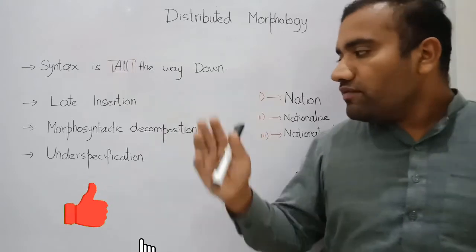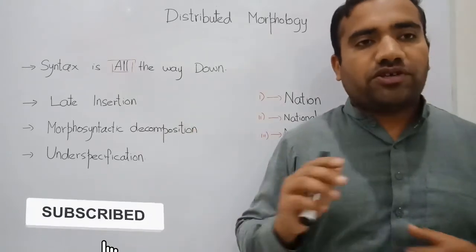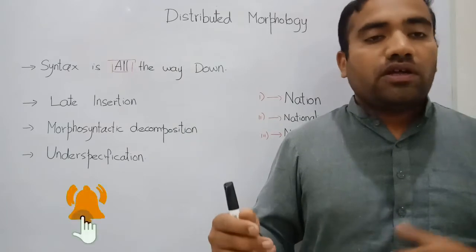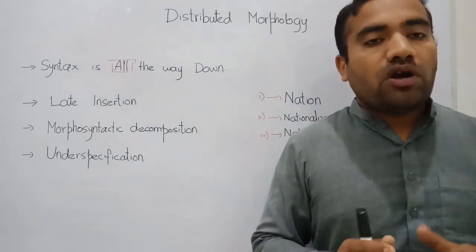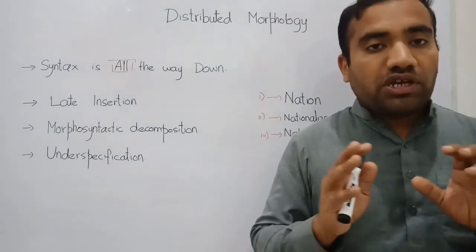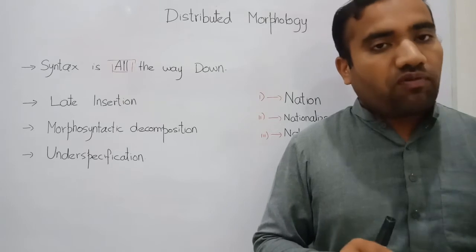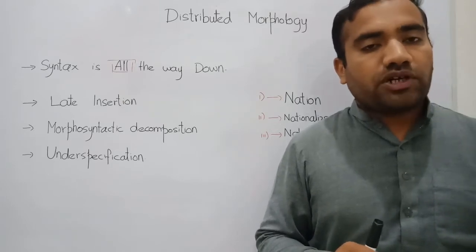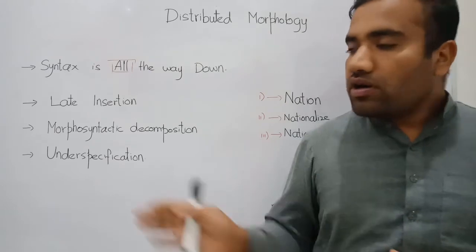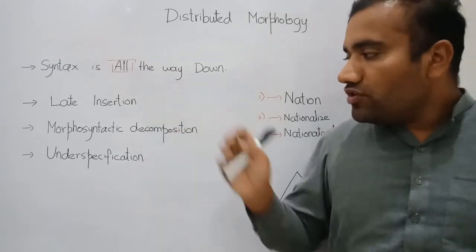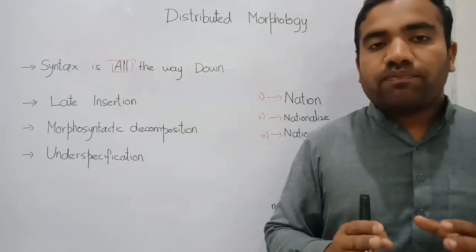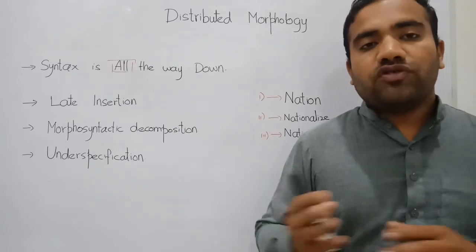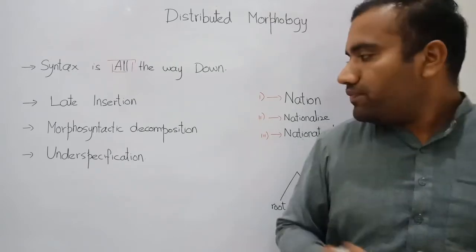The third core is underspecification. We have to specify the word — what type of word it is. If we have generated one type of word, we must identify that particular word. You must know how we can apply and handle all these things within morphology.